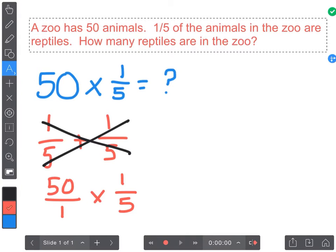When I do this then I would multiply my two numerators together. 50 times 1 gives me 50, and I would multiply my two denominators together. 1 times 5 gives me 5. I would then simplify by dividing them both by 5 and simplify again because 10 over 1 equals 10.